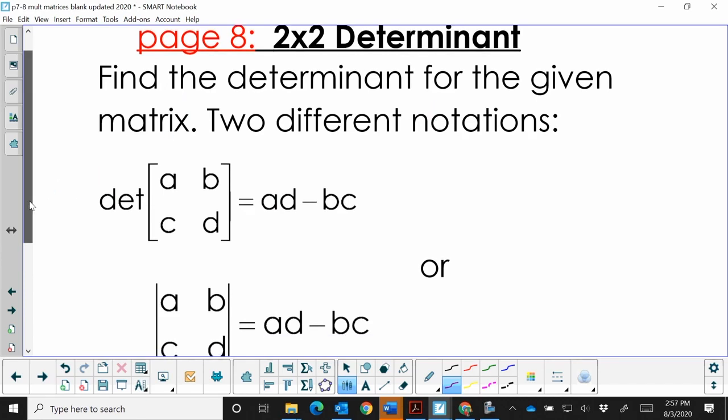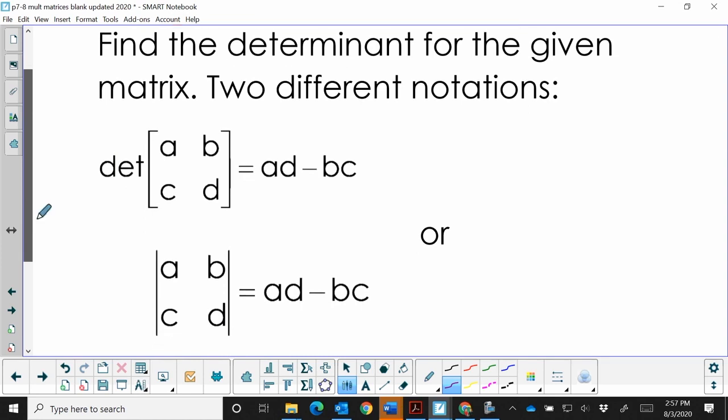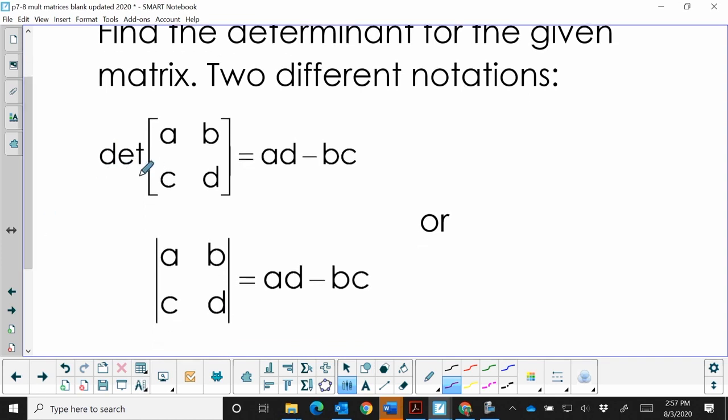There are two different notations for finding the determinant. I showed you on the first page 'det' - the determinant of the matrix. Or it might even look like this where you've got four elements that looks like a matrix, but notice it's got like absolute value bars on it. That also means find the determinant.